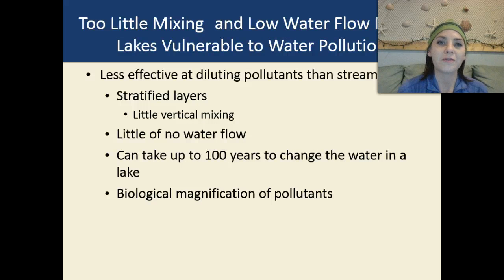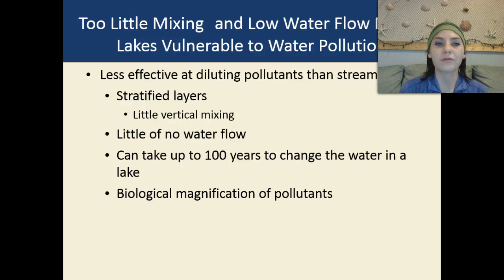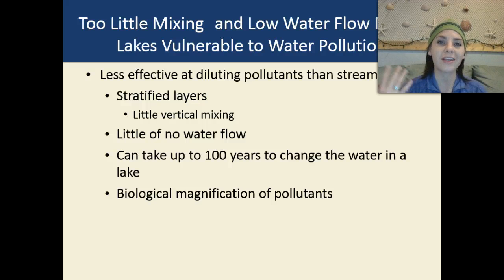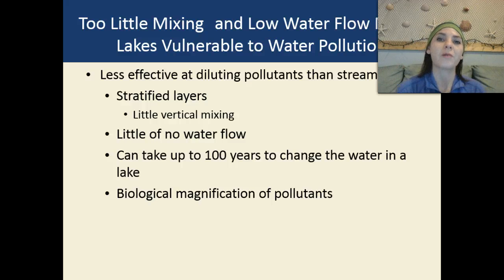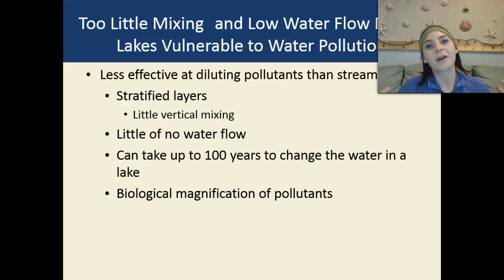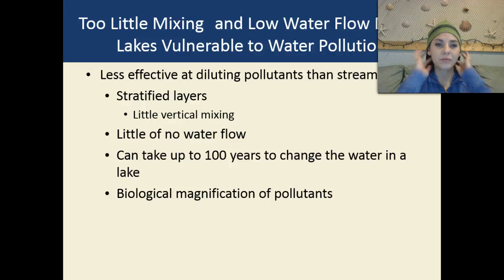One of the effects of too little mixing and very low water flow is that it makes lakes very vulnerable to water pollution. When we have streams and rivers, they can take care of themselves because they have a steady flow of water coming in and going out. However, lakes are pretty much a sedentary body of water — there's not much going in or out. So they're a lot less effective at diluting pollutants than streams and rivers are.